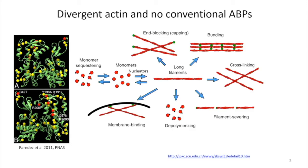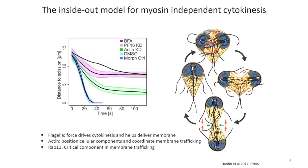It turns out that Giardia is missing all the conserved actin-binding proteins — even myosin, the contractile motor famously involved in cell division. When I tell people this, they always ask how does Giardia divide if it doesn't have myosin 2 or any other myosins? We did some work on that which I don't have time to show you all of, but it's going to set up the next part of my talk.